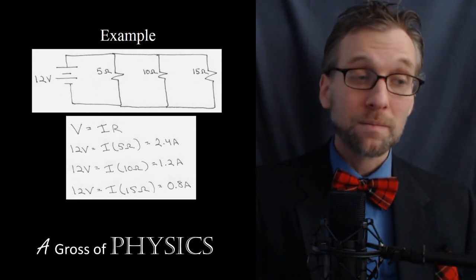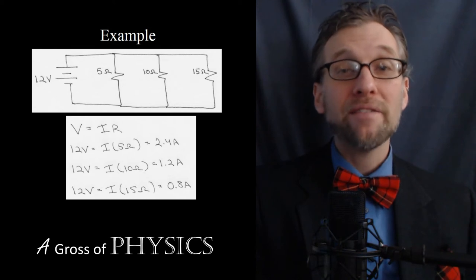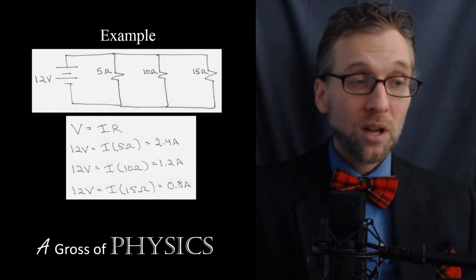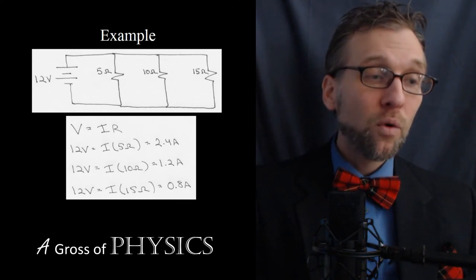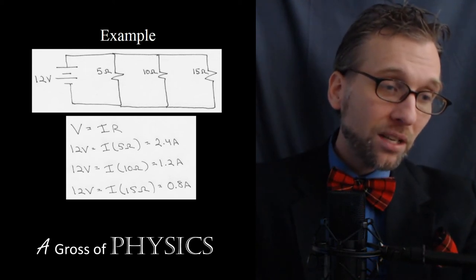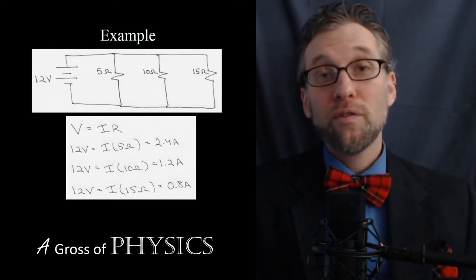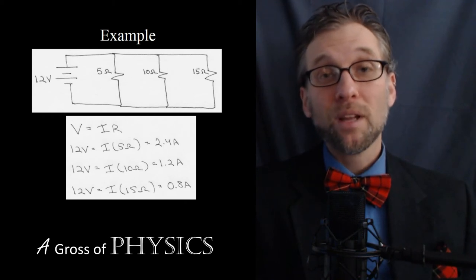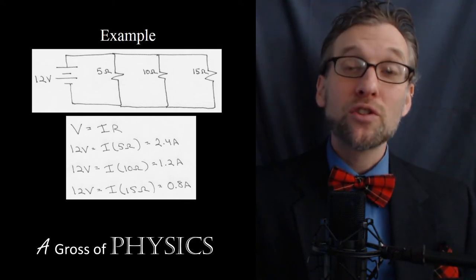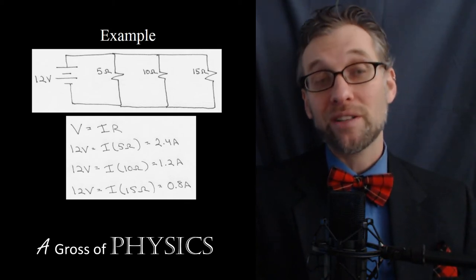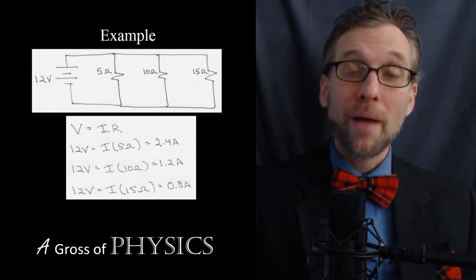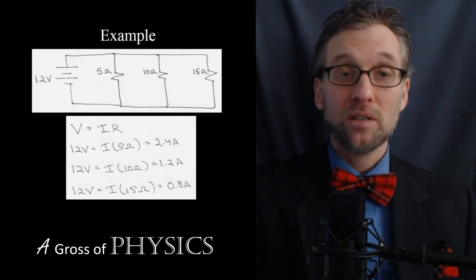Adding those three currents together — 2.4 + 1.2 + 0.8 — we end up getting 4.4 amps, which matches the current that leaves the battery. The beauty of circuits is that you always have different ways to solve for the variables, and you should always be able to check your answers. Whatever current leaves the battery has to add up to the total of the three branch currents.